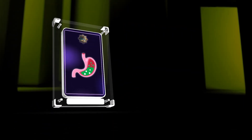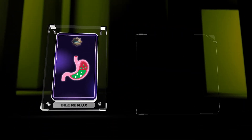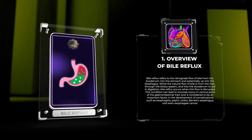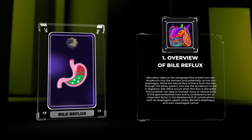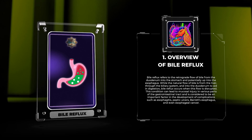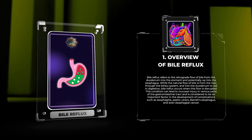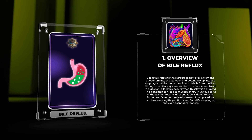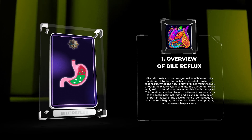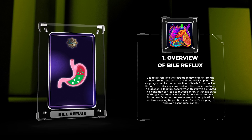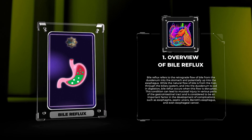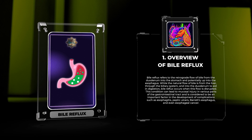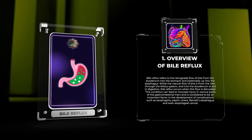Bile reflux refers to the retrograde flow of bile from the duodenum into the stomach and potentially up into the esophagus. While the natural flow of bile is from the liver, through the biliary system, and into the duodenum to aid in digestion, bile reflux occurs when this flow is disrupted. This condition can lead to mucosal injury in various parts of the gastrointestinal tract and is considered an important factor in the development of complications such as esophagitis, peptic ulcers, Barrett's esophagus, and even esophageal cancer.